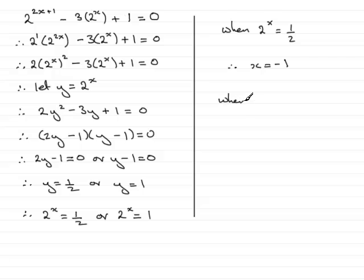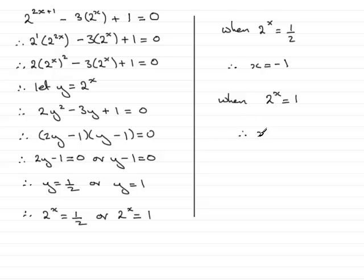Also, when 2 to the power x equals 1, the solution is again obvious. Anything to the power 0 gives 1, so therefore x is equal to 0.